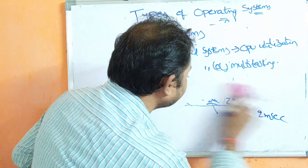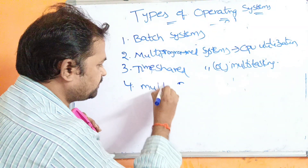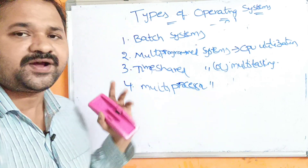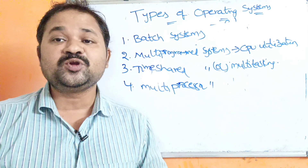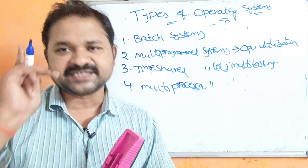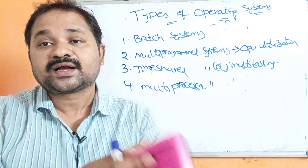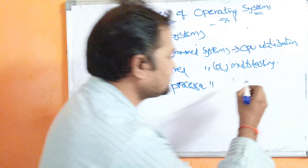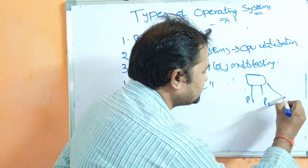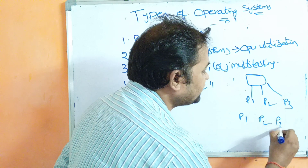The next type is the multiprocessor system. Instead of a single processor, multiple processors are connected to the same computer. We have a single computer with, let us assume, 3 processors: P1 processor, P2 processor, and P3 processor.